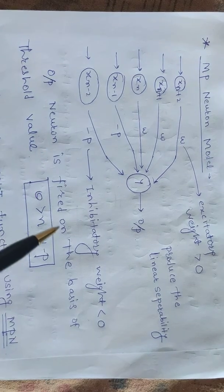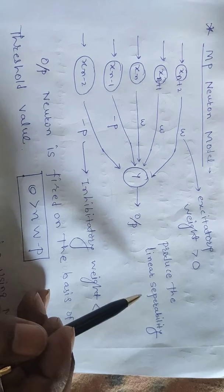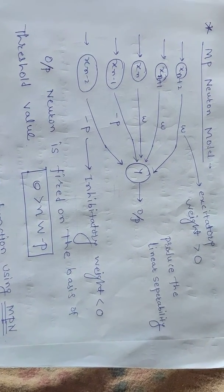This is about the basic structure of the MP neuron model, which aims to produce linear separability based on the threshold value. This is a very important concept for the MP neuron model.